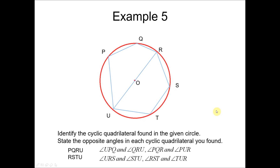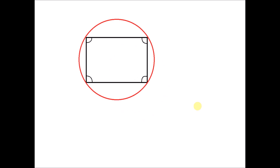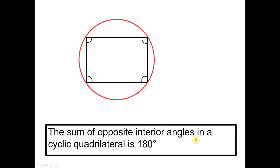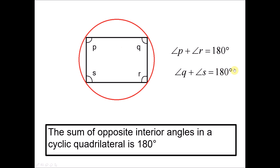Now we look at another property of a cyclic quadrilateral. When we measure the angles, we find that the sum of the opposite interior angles in a cyclic quadrilateral is 180 degrees. So if we label the vertices P, Q, R, S, then angle P plus angle R equals 180, and angle Q plus angle S equals 180. Regardless of the shape, as long as it is a cyclic quadrilateral, the sum of opposite angles equals 180 degrees.